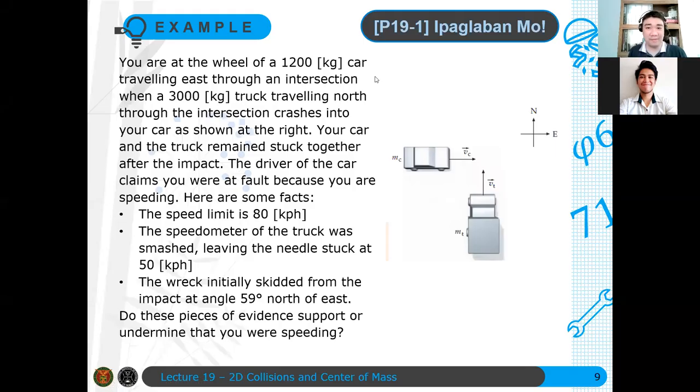Now let's have another, the first problem of this session is ipaglaban mo. You are at the wheel of a 1,200 kilogram car traveling east through an intersection when a 3,000 kilogram car traveling north through the intersection crashes into your car as shown in the right. So you have two cars here and you are driving the car and someone drives the truck and then there's a collision happening.